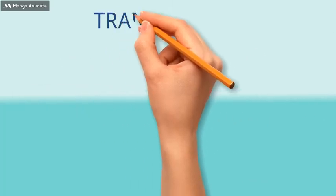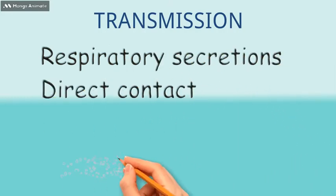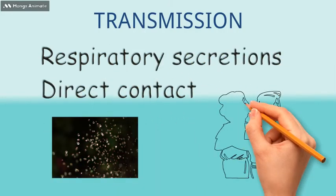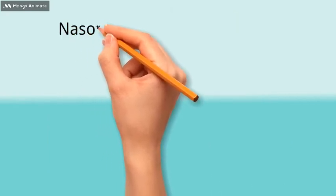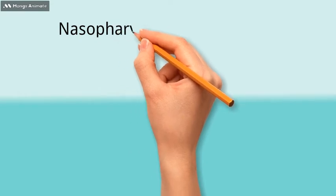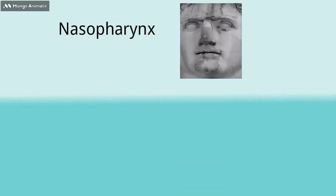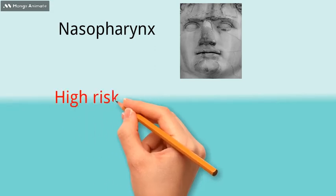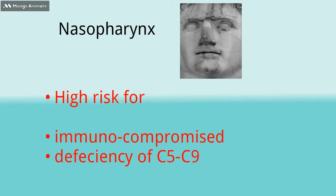According to the transmission, it is transmitted from person to person by respiratory secretions and direct contact. Neisseria meningitidis is present in our nasopharynx as commensal flora. Immunocompromised patients and those who have a deficiency of the terminal common complement pathway are susceptible to meningitidis infection.